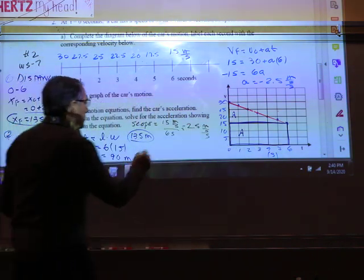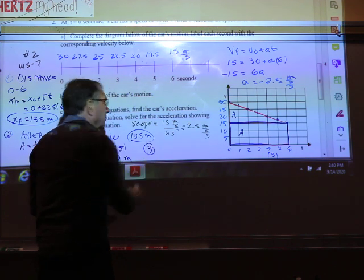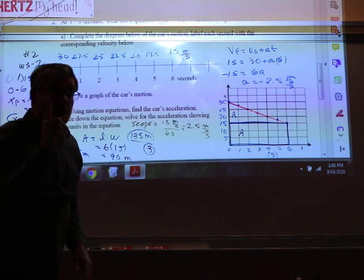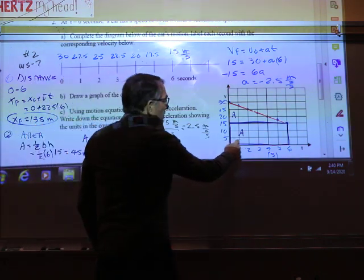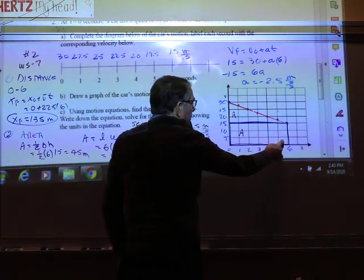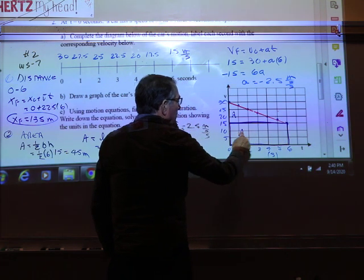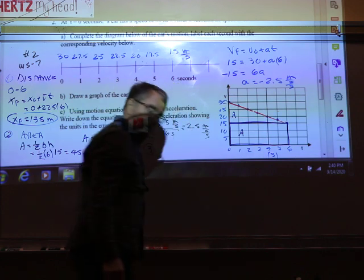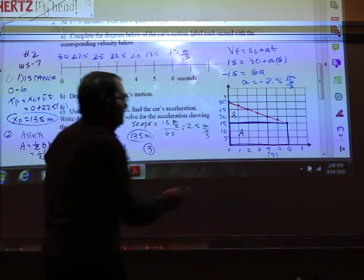There's also a third way. Watch. This is kind of cool. A third way. You can count boxes. Watch. Count. 1, 2, 3, 4, 5, 6, 7, 8, 9, 10, 11, 12, 13, 14, 15, 16, 17, 18. There are 18 boxes here.